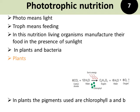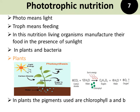Phototrophic nutrition can be observed in plants and bacteria. In plants, the inorganic substances — that is six molecules of carbon dioxide and twelve molecules of water — combine in the presence of light and chlorophyll to produce organic substances, that is carbohydrates, plus six molecules of water and six molecules of oxygen. The pigments used in plants are chlorophyll A and B.